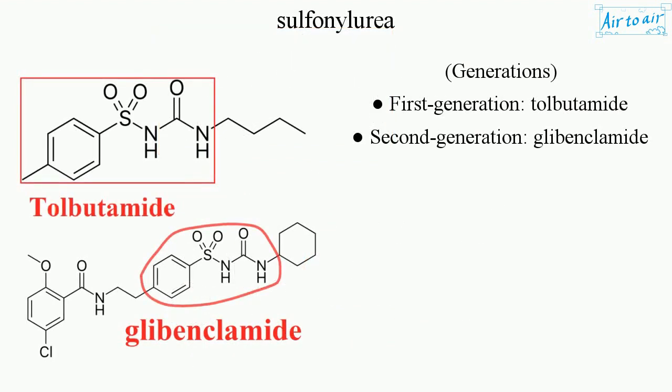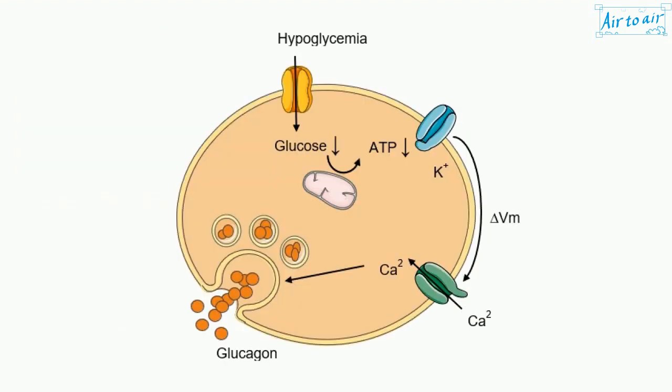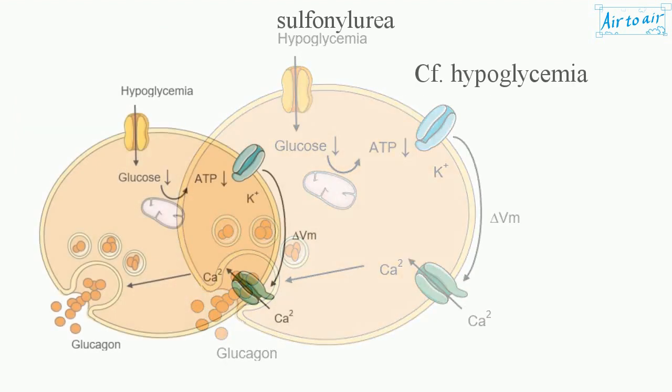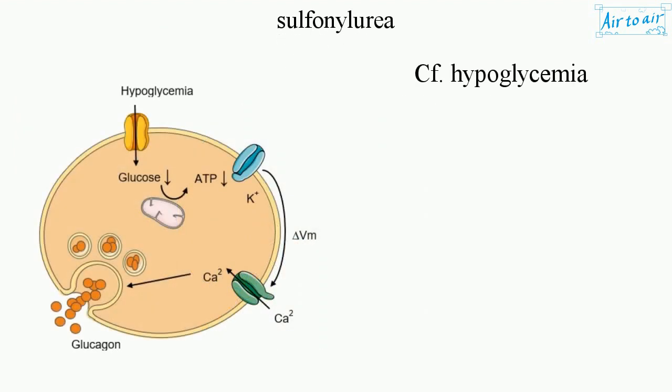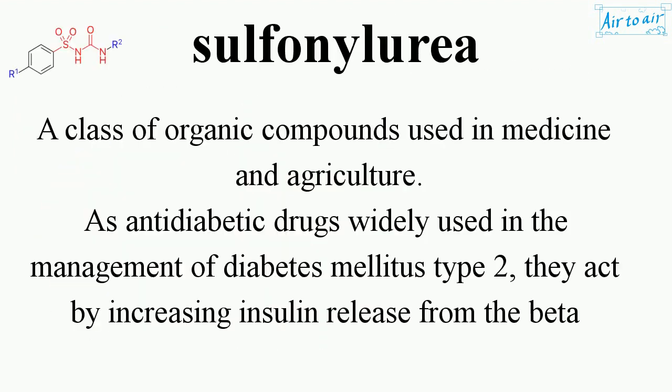Generations: 1st generation — tolbutamide; 2nd generation — glybenclamide. Common side effect: hypoglycemia.